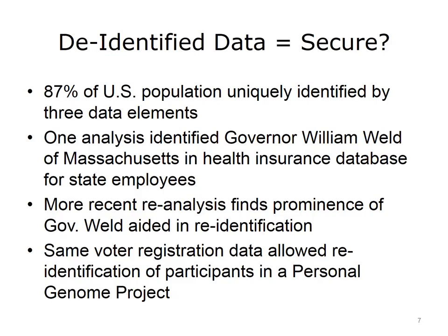Think about that for a minute. If someone has just these three pieces of data, they can identify the individual to whom it belongs 87% of the time. In some additional early work by Sweeney in 1997, she showed that after spending $20 to purchase a voter registration list for Cambridge, Massachusetts, she was able to identify the governor of Massachusetts, William Weld, in a health insurance database for state employees simply by linking zip code, gender, and date of birth from the voter registration list to the de-identified health data in the health insurance database.